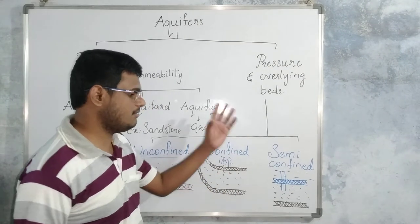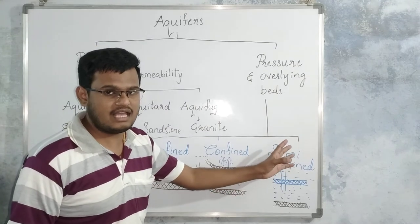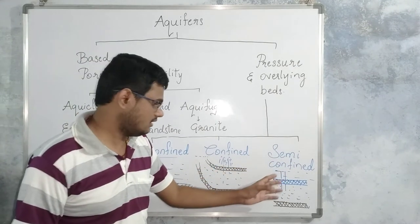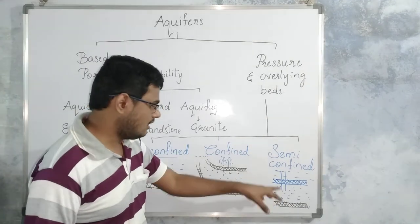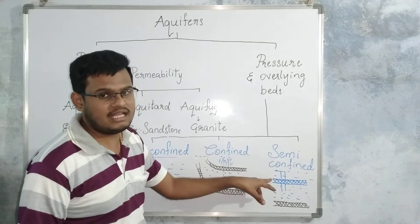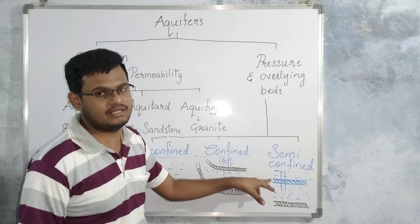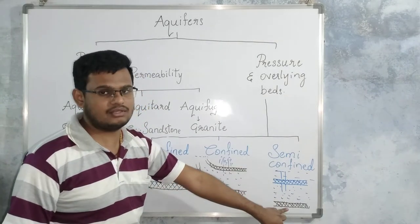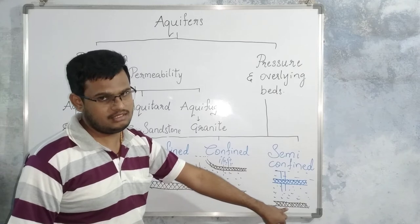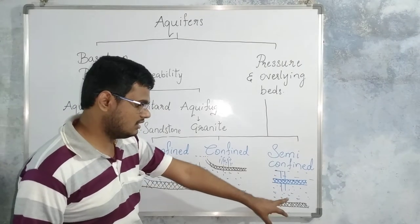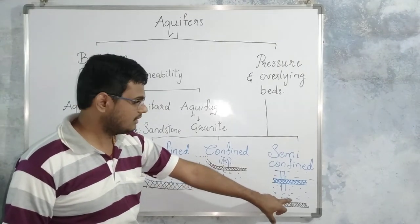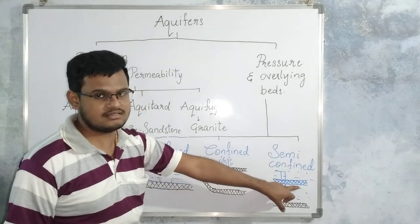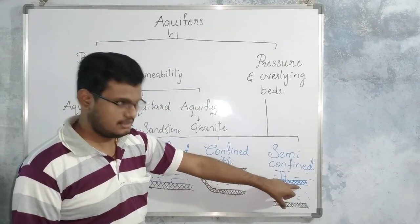The next type is semi-confined aquifer. This type is also sandwiched, but the difference is that on the upper side you have an aquitard instead of an aquiclude. The lower side has the aquiclude — that means the impermeable rock bed. Whatever water is present in this aquifer can travel upward through the aquitard, which has good porosity and permeability.